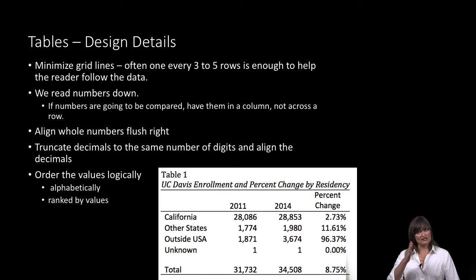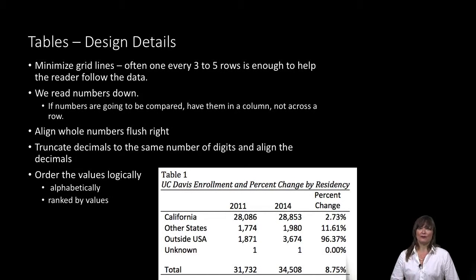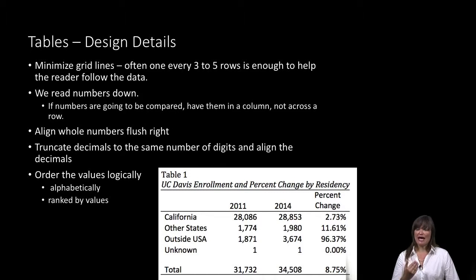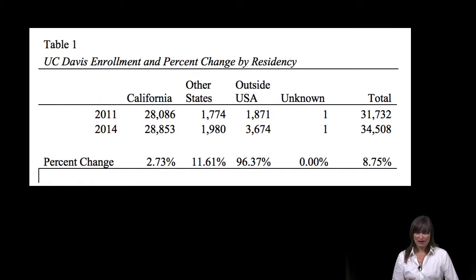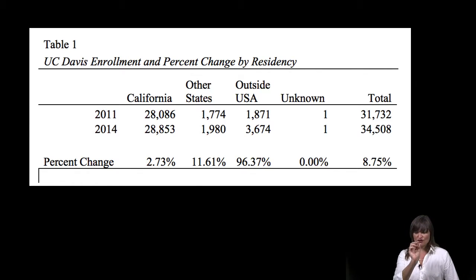Speaking about following the numbers across and up and down — it is far easier to read numbers up and down than left to right. That's how we read numbers. So if you want your audience to compare numbers, those numbers need to be in a column so that the audience can scan down those numbers.